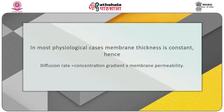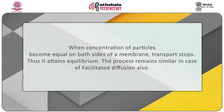In most physiological cases, the membrane thickness is constant. Hence, diffusion rate would be concentration gradient multiplied by membrane permeability multiplied by surface area. Thus, it can be stated that when concentration of particles becomes equal on both sides of a membrane, transport stops and equilibrium is attained. The process remains similar in the case of facilitated diffusion also.